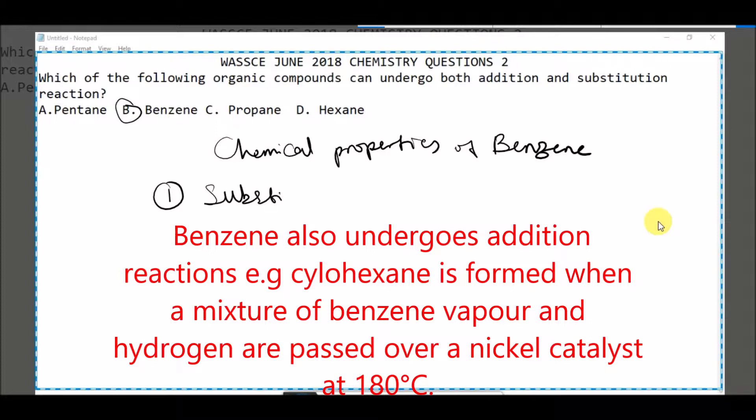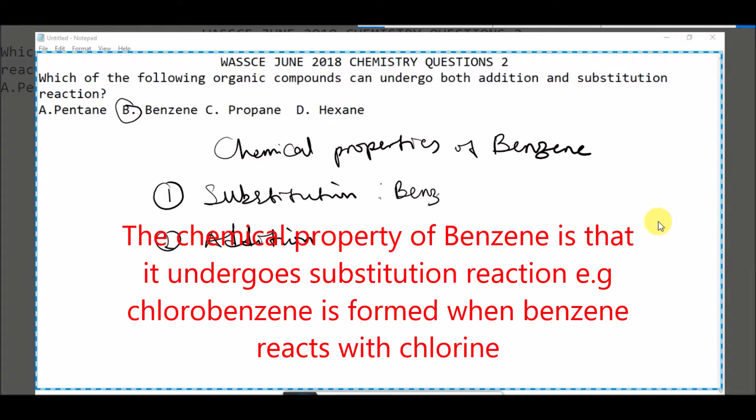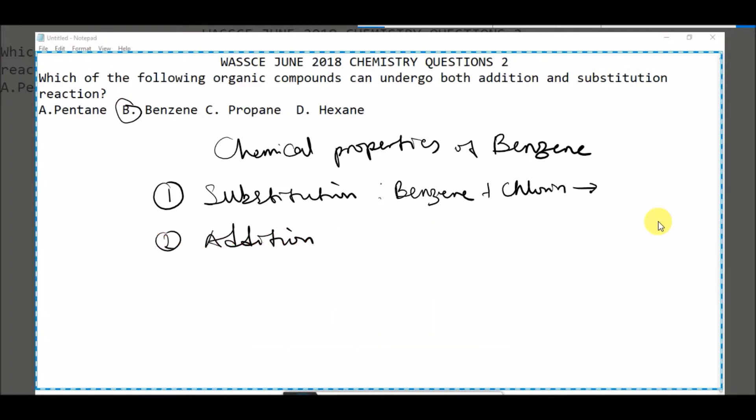Substitution reaction, and number two is addition reaction. In substitution reaction, benzene reacts with chlorine to form chlorobenzene. So that is a substitution reaction.